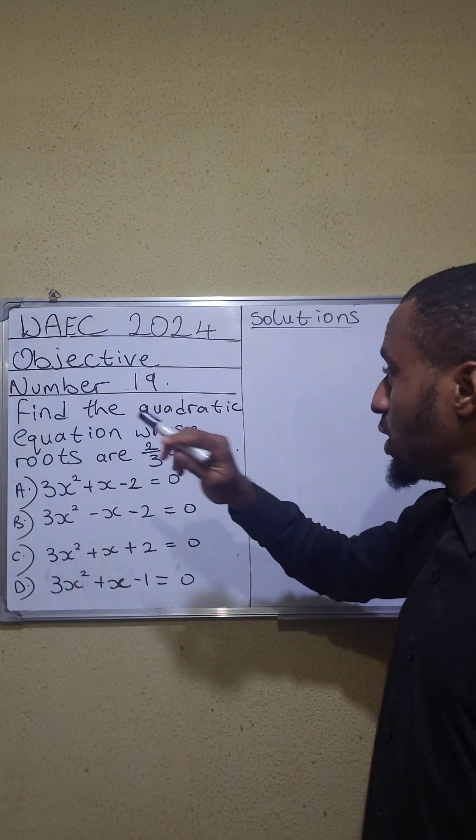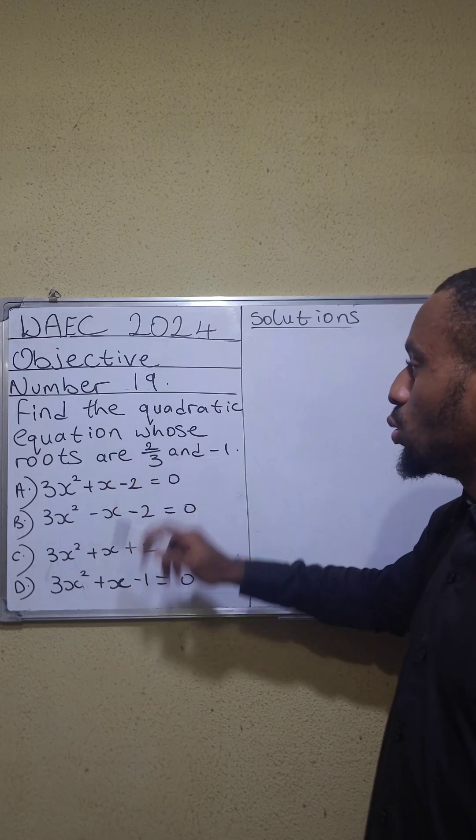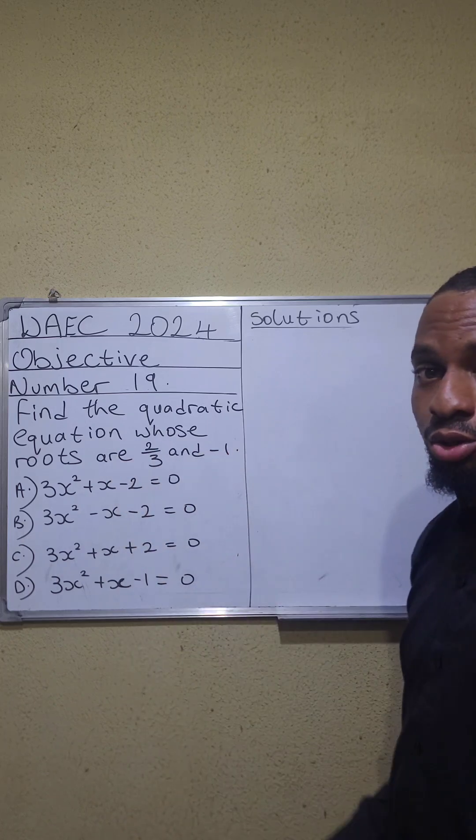DAEC 2024 objective number 19. Find the quadratic equation whose roots are 2 over 3 and minus 1.